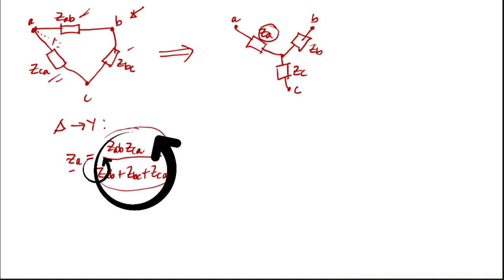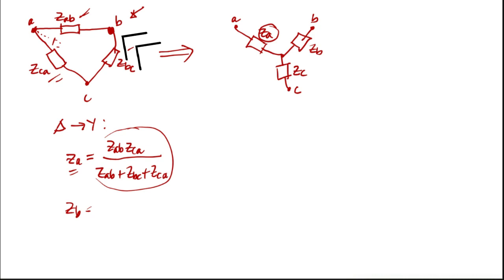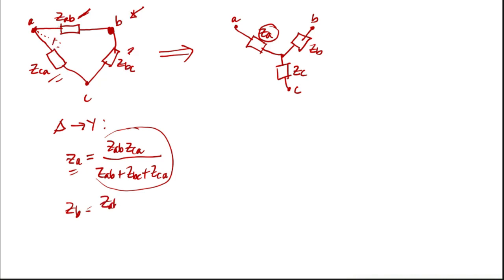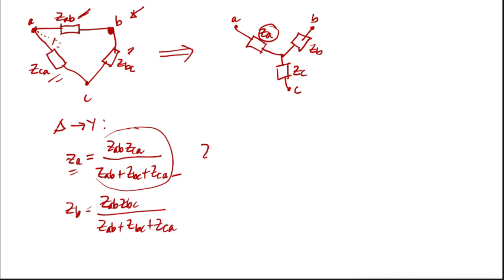So Za equals Zab times Zca divided by (Zab + Zbc + Zca). For Zb, the same approach applies — the connected branches are Zab and Zbc, so we multiply Zab times Zbc over the same denominator: Zab + Zbc + Zca. For Zc, the impedance connected at C gives Zca multiplied by Zbc, divided by Zab + Zbc + Zca.